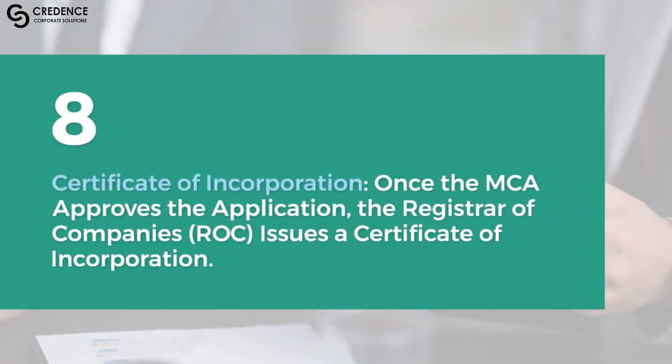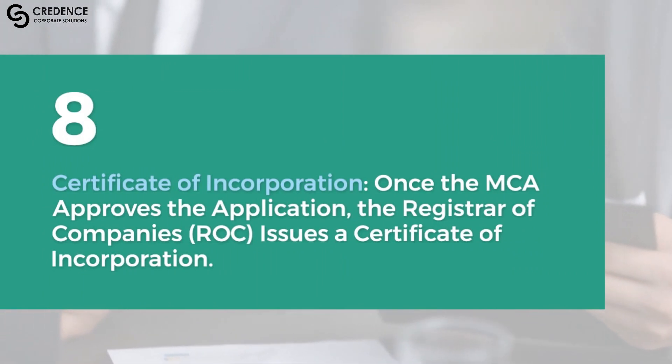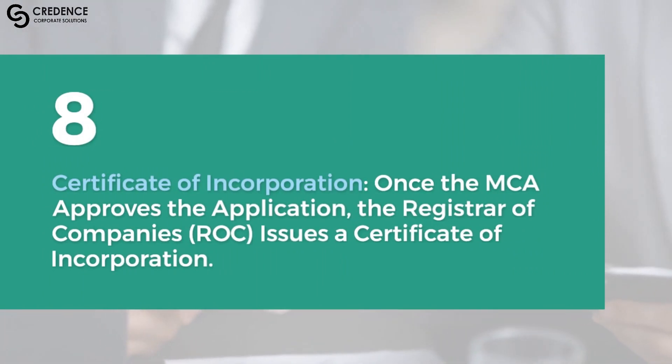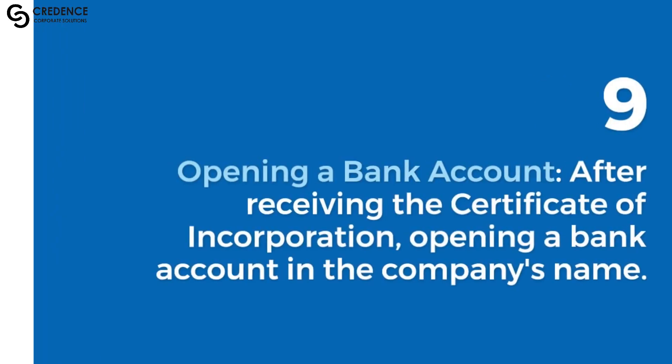Step 7: Certificate of Incorporation. Once the MCA approves the application, the Registrar of Companies will issue a Certificate of Incorporation. Step 8: Opening a Bank Account. After receiving the Certificate of Incorporation, open a bank account in the company's name.